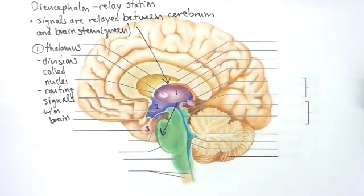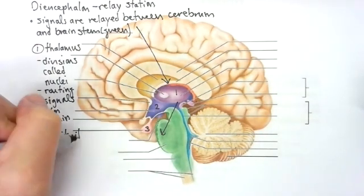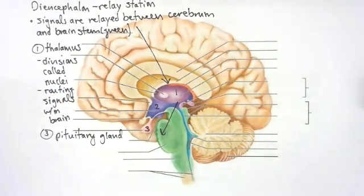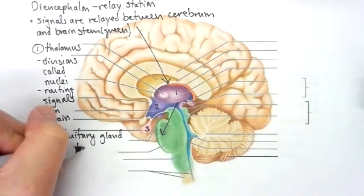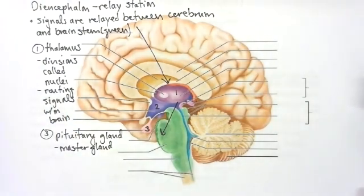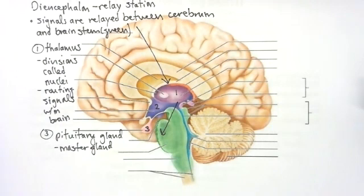Structure number three is the pituitary gland. Back when we talked about the endocrine system, we talked about the fact that this is the master gland — it controls all of the other glands. It's not technically considered to be part of the brain; it's considered its own separate structure. This is what releases the hormones that turn on or turn off the adrenal glands, and activates or deactivates the thyroid or parathyroid based on what it releases.